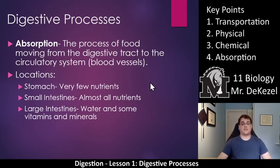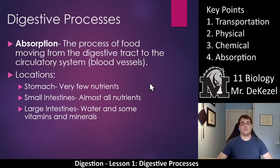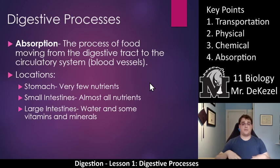The last digestive process is absorption — the process of food moving from the digestive tract to the circulatory system, into the blood vessels, so that nutrients can be transported throughout your body to where they're needed. Some nutrients get absorbed in the stomach, a lot in the small intestine, and then in the large intestine, water, vitamins, and minerals get absorbed. Absorption is primarily the taking in of all the nutrients broken down in the stomach and small intestine, with most occurring in the small intestine and some in the large intestine.